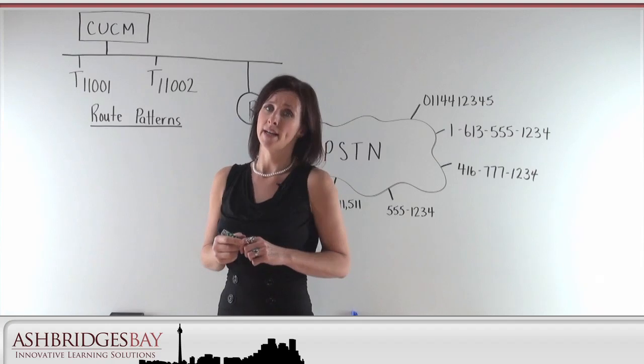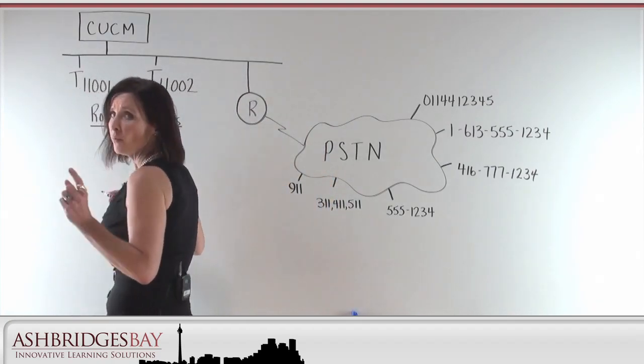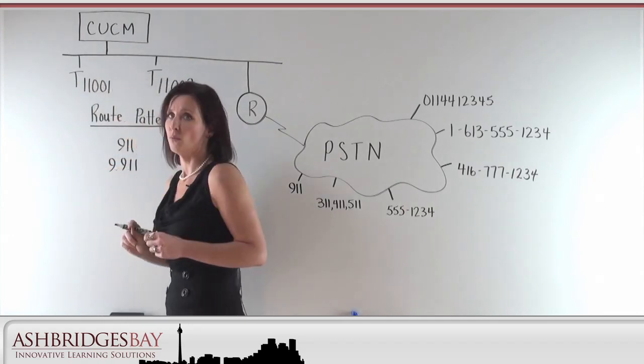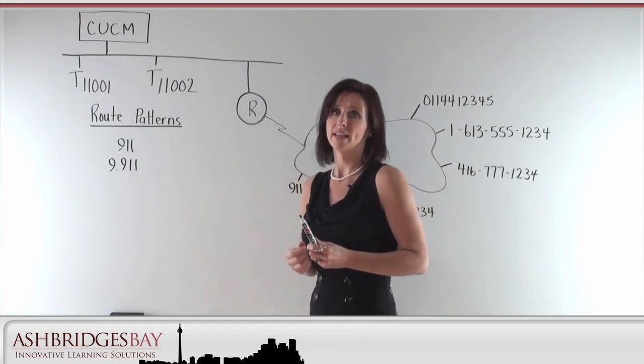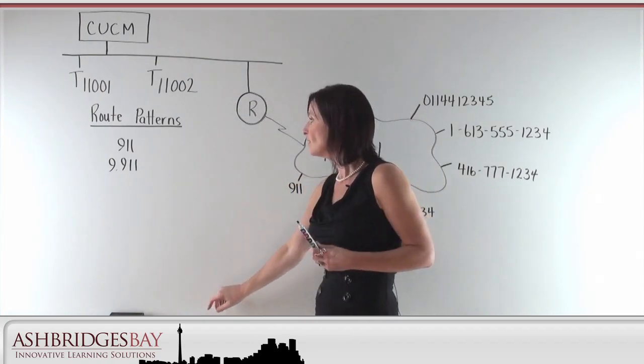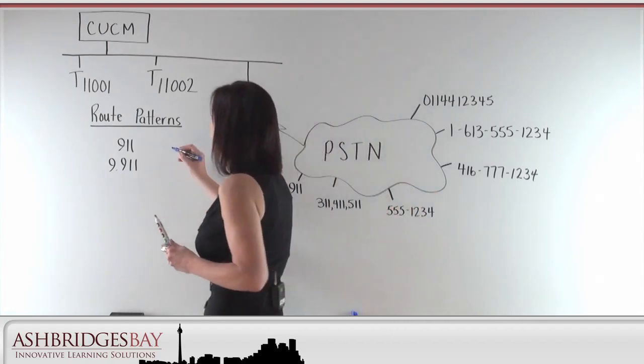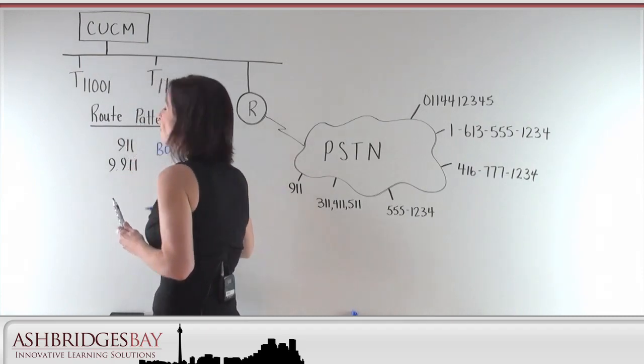So, let's have a look at 911. Do we want to configure 911 into the call manager? Or do we want to configure 9.911? We want both. We don't know what's going to happen in the case of an emergency. Is someone going to pick up the phone and remember to dial the access code? Or are they just going to dial 911? So, we want to have both of those configured into the call manager.